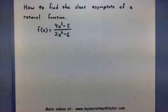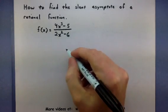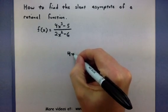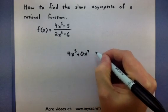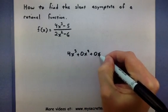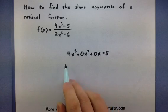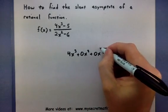To actually find that slant asymptote, we go through the long division process and basically record our quotient. So I'm going to take 4x cubed plus 0x squared plus 0x minus 5. That represents our top polynomial.